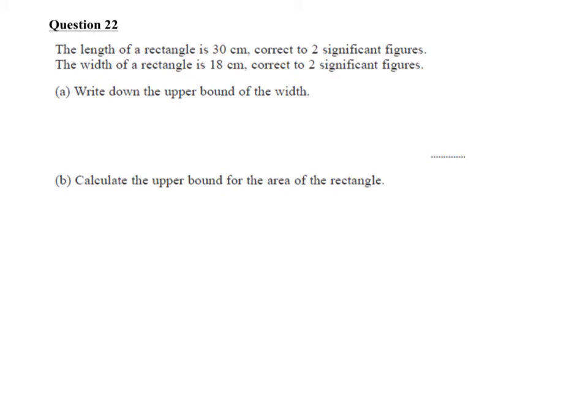Question 22. The length of a rectangle is 30 centimetres, correct to two significant figures. The width of the rectangle is 18 centimetres, correct to two significant figures. Write down the upper bound of the width.